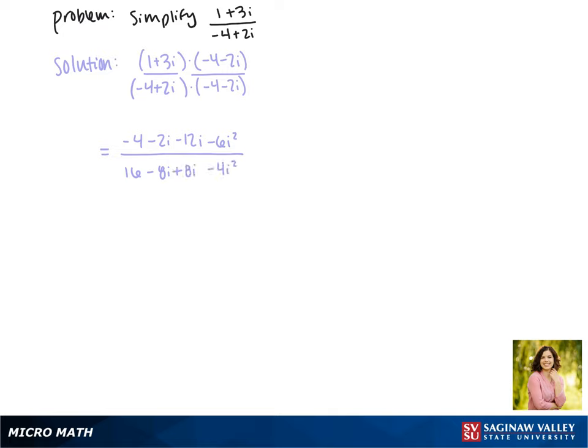Notice here that the i terms will drop out. Now in the numerator we can combine our i terms, those will give us a negative 14i. i squared is negative 1, so negative 6 times negative 1 is 6.